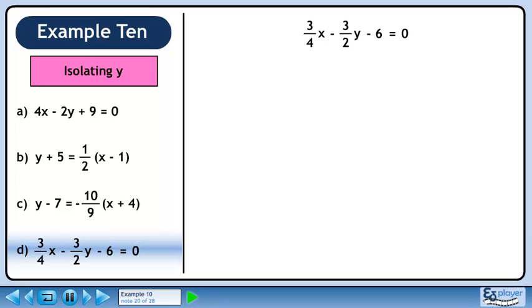Now we'll isolate y in part d. The LCM of 4 and 2 is 4. Multiply each side of the equation by 4.